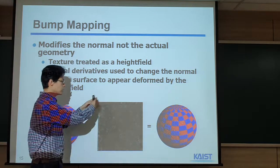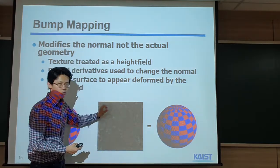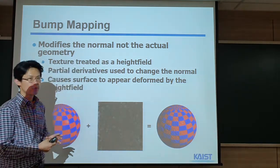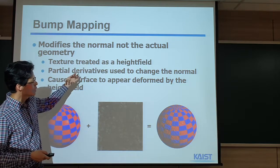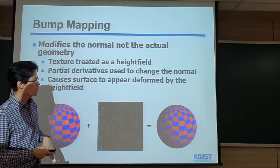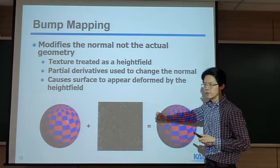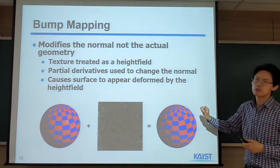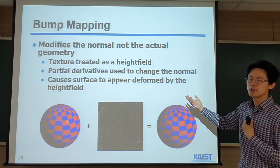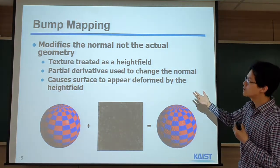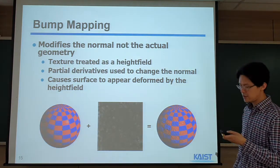We can get this kind of end effect — we change the normal, and it has a different appearance depending on the light. Some regions look more darker, some other regions look more brighter. You can see when you look at this, it looks a little bit bumpy — that's why it got the name bump map. But overall it's nothing but a 2D texture storing 2D information, basically the partial derivative that changes the normal.